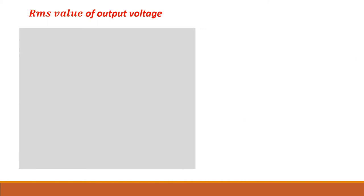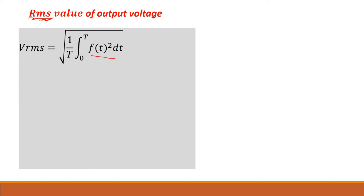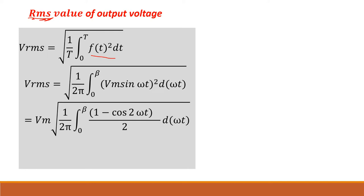Next, find the root mean square value. For the RMS, you take the square root of the average of the squared function. F of T is V0, which is Vm sin(ωt) — square it. Since you cannot directly integrate sin²(ωt), replace it with (1 minus cos 2ωt)/2, then integrate. You will get the RMS value of the output voltage. In all cases you have the term beta, but we have not yet found what beta is.